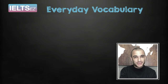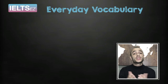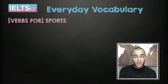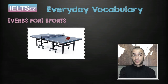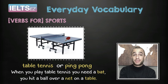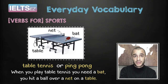See if you can follow me with the next set of pictures. I will give you some verbs associated with different types of sports. So what sport is this? Yes — table tennis or ping pong. When you play table tennis, you need a bat. You hit a ball over a net on a table. Bat. Net. Table.